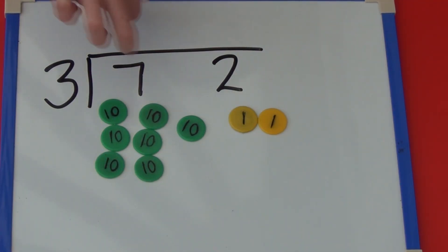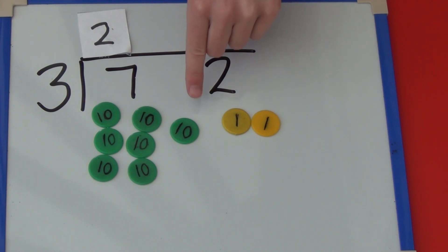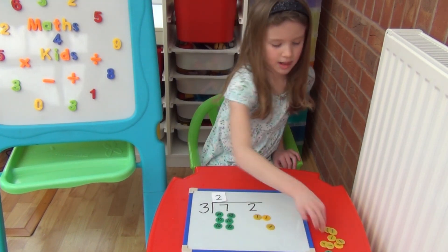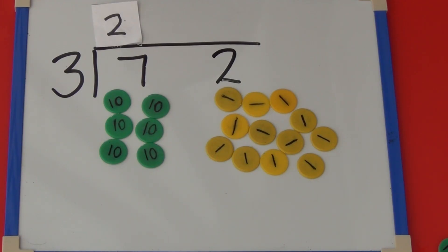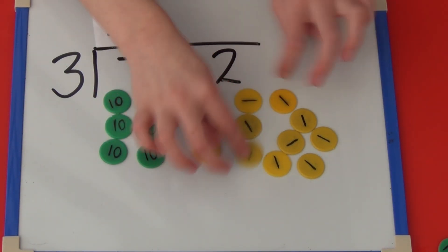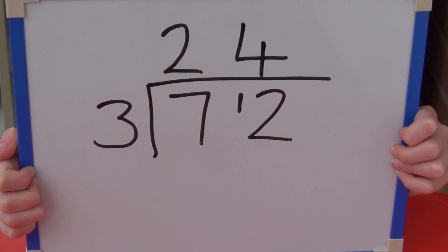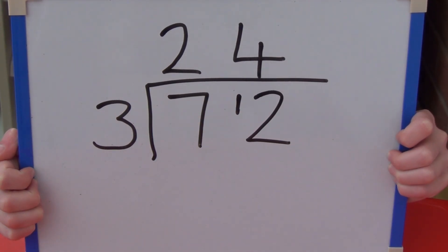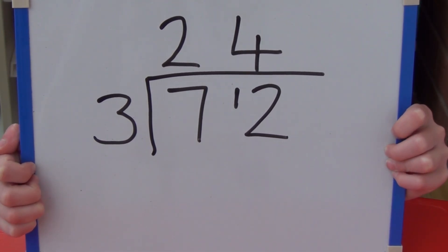I've made 2 groups of 3 tens, but this time I have a problem — I have one 10 counter left, so I can't make another group of 3. I'm going to have to exchange my 10 for 10 ones and put them with the 2 ones I already have. We now have 12 ones which I need to divide into groups of 3. 72 divided into groups of 3 gives us 2 tens and 4 ones which is 24. We can show the one 10 we exchanged by writing it as a small one in front of the 2, telling us we now have 12 ones. So 72 divided by 3 equals 24.